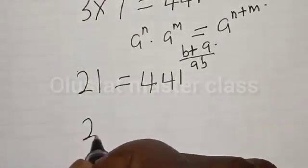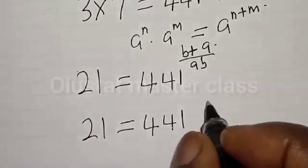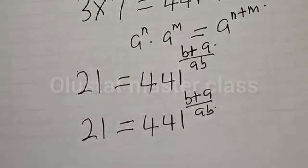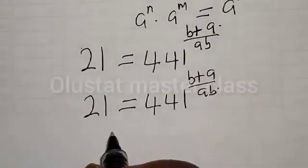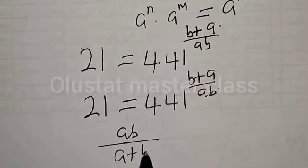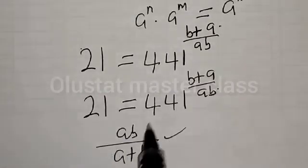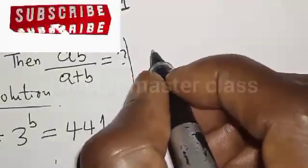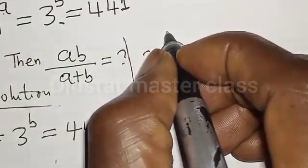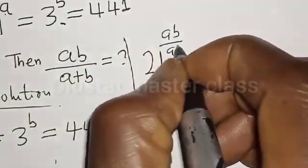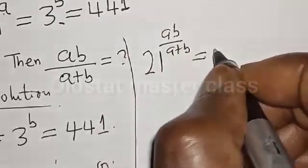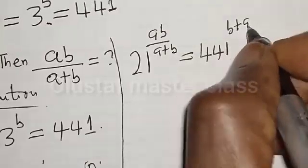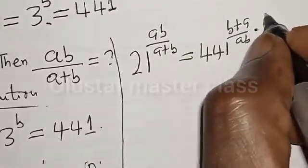So our equation becomes: 21 is equal to 441 raised to power B plus A divided by AB. Now, as you know, what we are looking for is the value of AB divided by A plus B. That is our focus. Now, let's multiply the exponent of both sides by AB divided by A plus B.